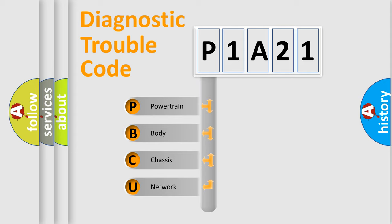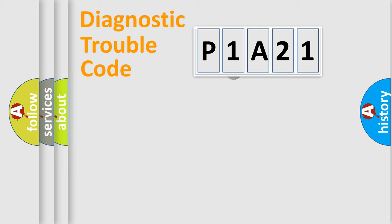We divide the electric system of automobile into four basic units: powertrain, body, chassis, network. This distribution is defined in the first character code.